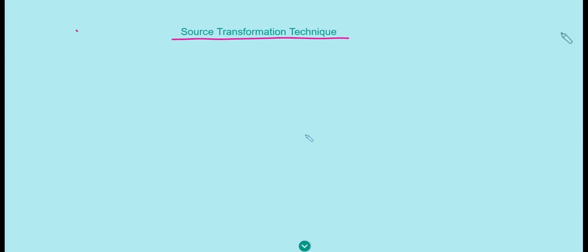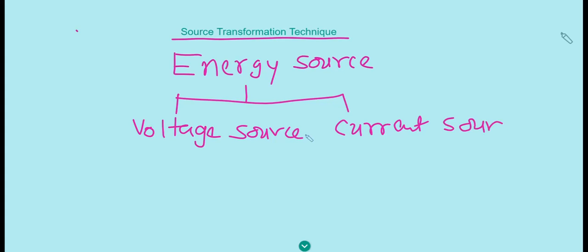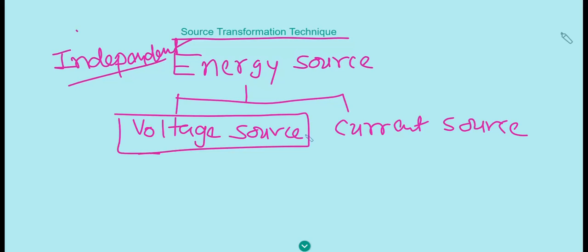In this video I am going to show you the source transformation technique. First of all you will understand types of sources. We can say energy source as a common term — it can be a voltage source or a current source. Right now I am talking about independent sources only. Here I am going to discuss how to convert a voltage source into a current source or a current source into a voltage source in a circuit.